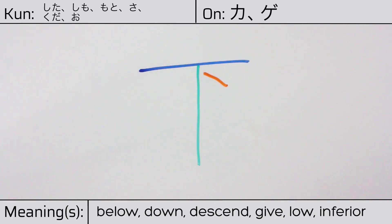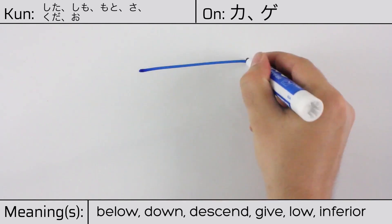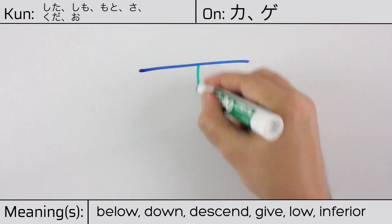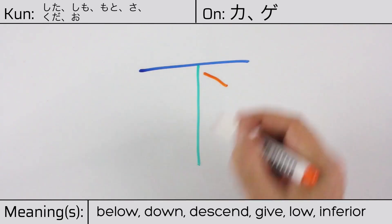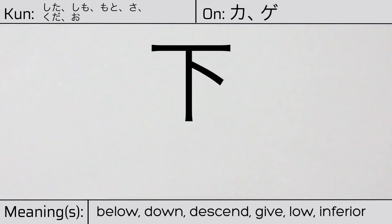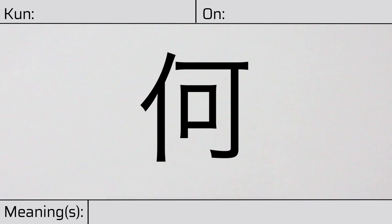You can remember this Kanji by the following hint: The fortune teller knows everything under the heavens. Our example sentence is: Tattete kudasai. Stand up, please.